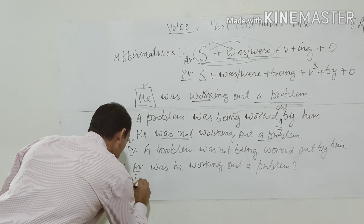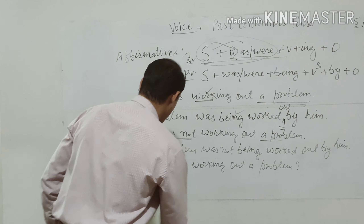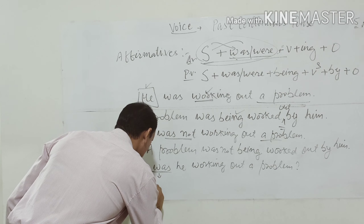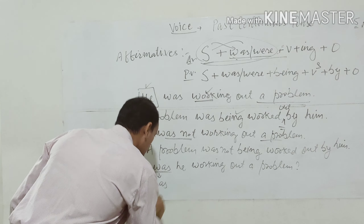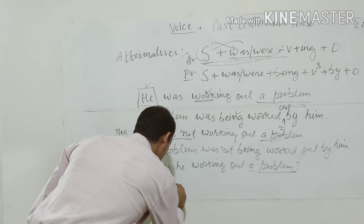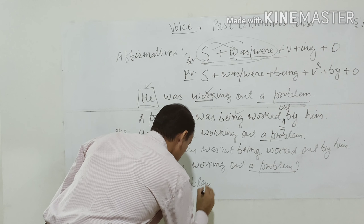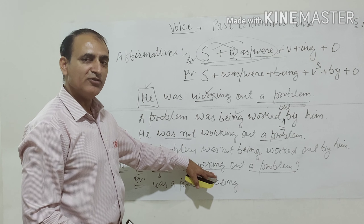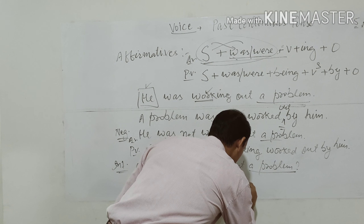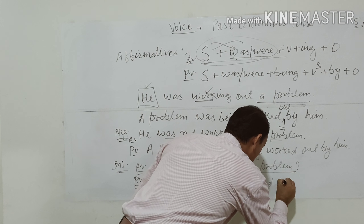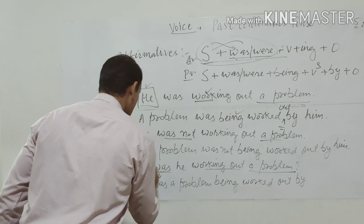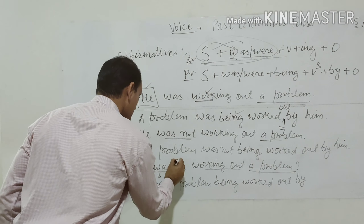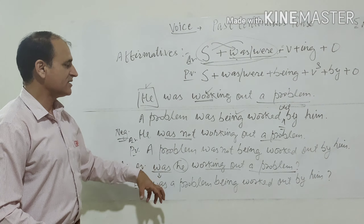Now we change this interrogative into passive voice. The helping verb 'was' stays at the front, followed by 'a problem', then 'being', then the third form 'worked out', then 'by him'. So the passive interrogative is: 'Was a problem being worked out by him?' — 'he' becomes 'him' as it moves to the object position.